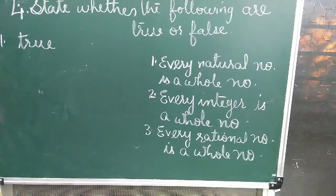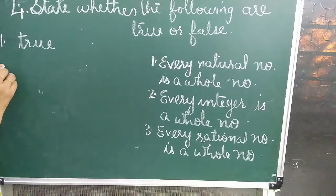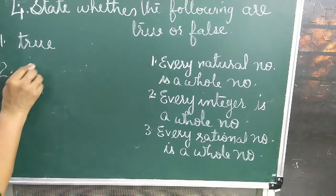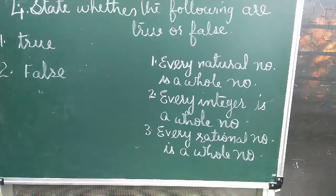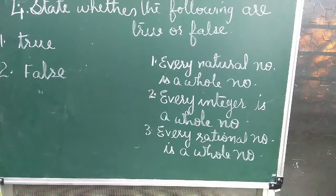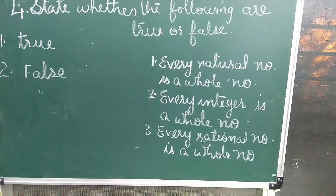Second statement: every integer is a whole number. Answer: false. Because integers also include the negatives of natural numbers, like minus 2, minus 3, minus 5, minus 1, and so on, which are not whole numbers.